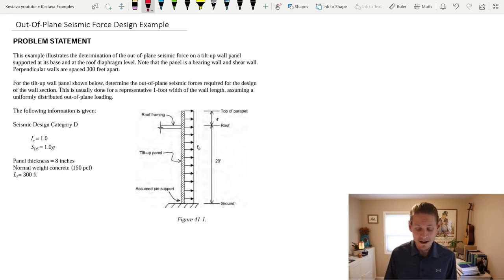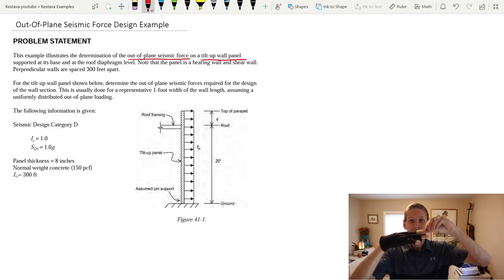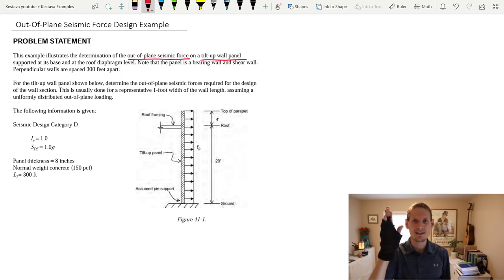So, you'll see here we already have the example ready for you. And remember, we're doing out-of-plane seismic force criteria. That's what we're finding on a tilt-up wall panel. And what those are, in short, are reinforced concrete panels that they cast on the ground on site. And then they actually tilt them up into place to create the walls of your structure and also the lateral system of your structure. So, both gravity and lateral all in one.